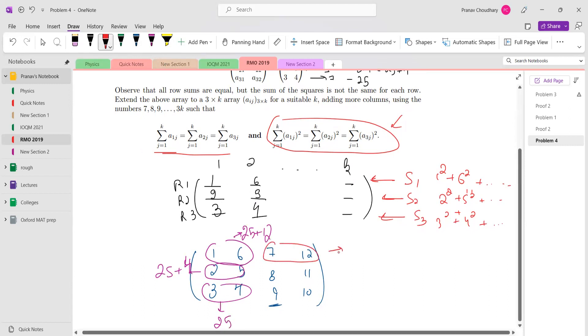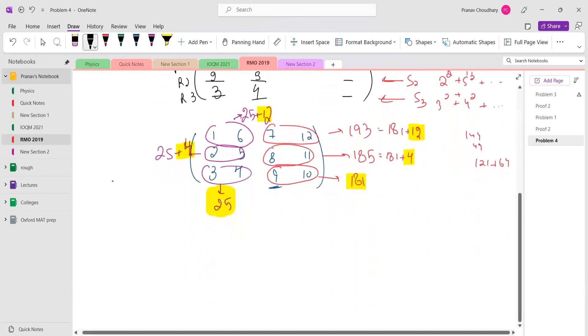This thing sums up to 144 plus 49 = 193. This sums up to 121 plus 64 = 185. And this sums up to 181. So this is 181 plus 4, and this is 181 plus 12. We see that the difference here is 12, here is 4 from the lowest term, and it's the same case: 181 increased by 4 and increased by 12.